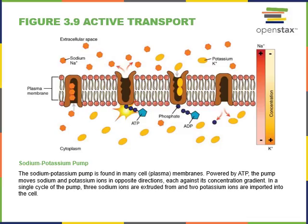Active transport requires ATP to move solutes across the membrane. Transport pumps — proteins embedded in the plasma membrane — use ATP to pump solutes against their gradients. One example is the sodium-potassium ATPase pump, which creates a high concentration of potassium in the cytosol and a low concentration of sodium by pumping sodium out and potassium in.